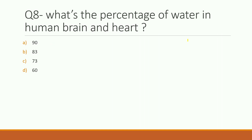Eighth question: what is the percentage of water in the human brain and heart? The right answer is 73%. Our brain and heart contain approximately 73% water. It is important that we keep our brain and heart hydrated. Different organs in the body carry different water percentages — lungs carry about 75% water.